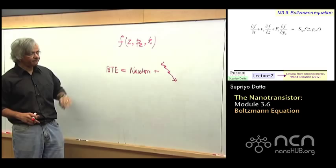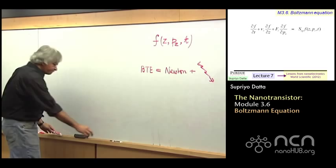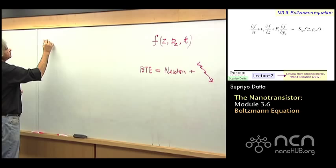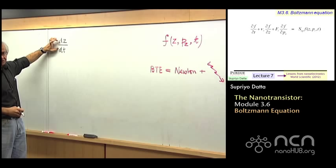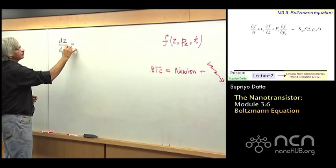So let me first try to explain how the Newton part of it gets into BTE. Now the way it works is something like this. According to Newton's laws, if you use z to denote the location of an electron, then the rate at which this changes, that's like what you'd call the velocity, that's what you'd define as the velocity of the electron.